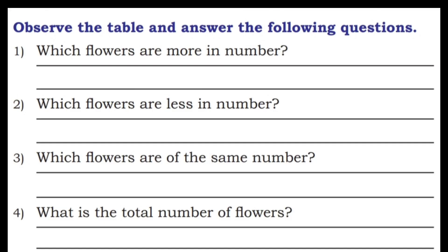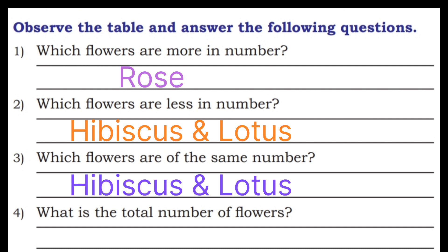Next, observe the table and answer the following questions. First one, which flowers are more in number? Rose. Second, which flowers are less in number? Hibiscus and lotus. Third one, which flowers are of the same number? Hibiscus is 5 and lotus is 5.